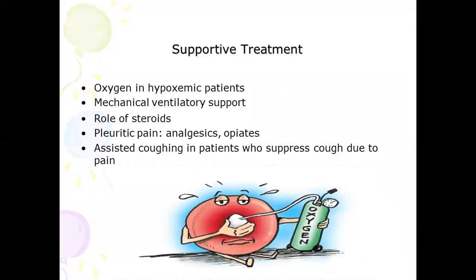Treatment of pneumonia is not only about antibiotics — supportive treatment is also essential. This includes oxygen supplementation in hypoxic patients; if arterial oxygen saturation is less than 90%, always give oxygen support. If the patient remains hypoxic or is hyperventilating despite oxygen, mechanical ventilatory support may be needed. In patients presenting with septic shock with very low blood pressure, steroids have a role. For pleuritic chest pain, give analgesics and opioids. If the patient cannot produce effective cough, assisted coughing can be performed.